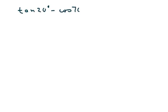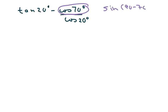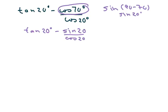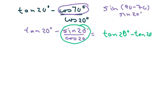The next one is: tan of 20 degrees minus cosine of 70 degrees over cosine of 20 degrees. I'm going to write cosine of 70 as sine, so this becomes sine of 90 minus 70 degrees, which gives sine of 20 degrees. So we have tan of 20 minus sine of 20 over cosine of 20. Since sine over cosine is the trig ratio for tangent, we have tan of 20 degrees minus tan of 20 degrees, which equals 0.